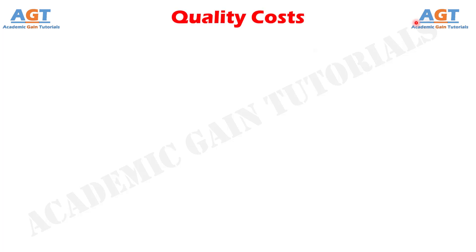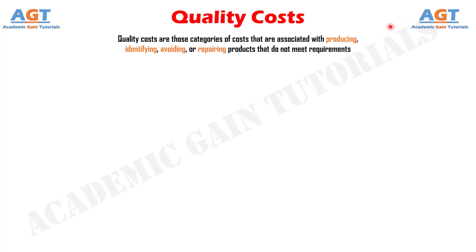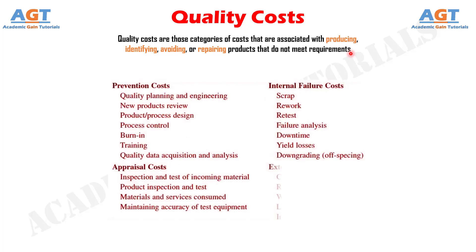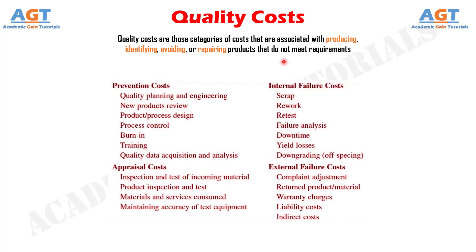Quality costs are those categories of costs that are associated with producing, identifying, avoiding, or repairing products that do not meet requirements. Many manufacturing and service organizations use four categories of quality costs, which are prevention costs, appraisal costs, internal failure costs, and external failure costs. Some quality authorities feel that these categories define the cost of poor quality.